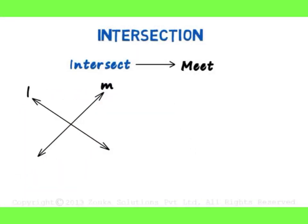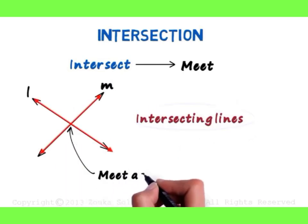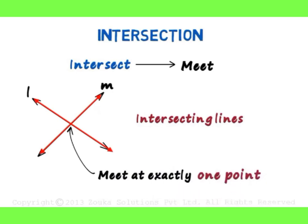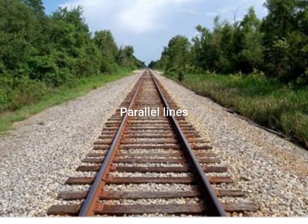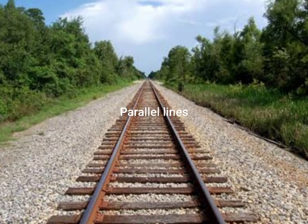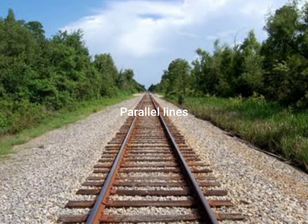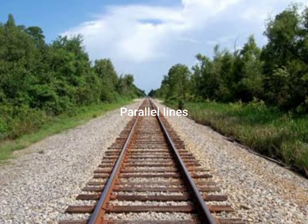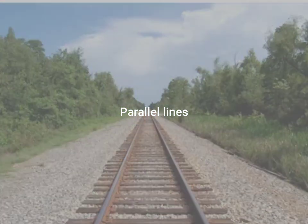See students, the next is intersecting points. You can see the two lines L and M are intersecting at one point. They are intersecting each other. Students, next is parallel lines. The best example for parallel lines are railway lines. See the railway lines. Both the lines go straight. So here, we have seen examples which we can see in nature.